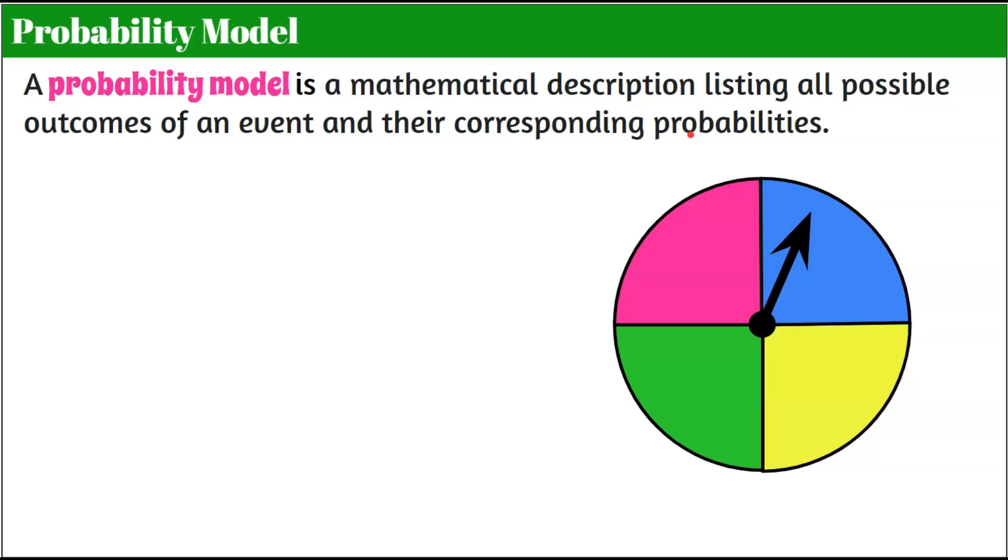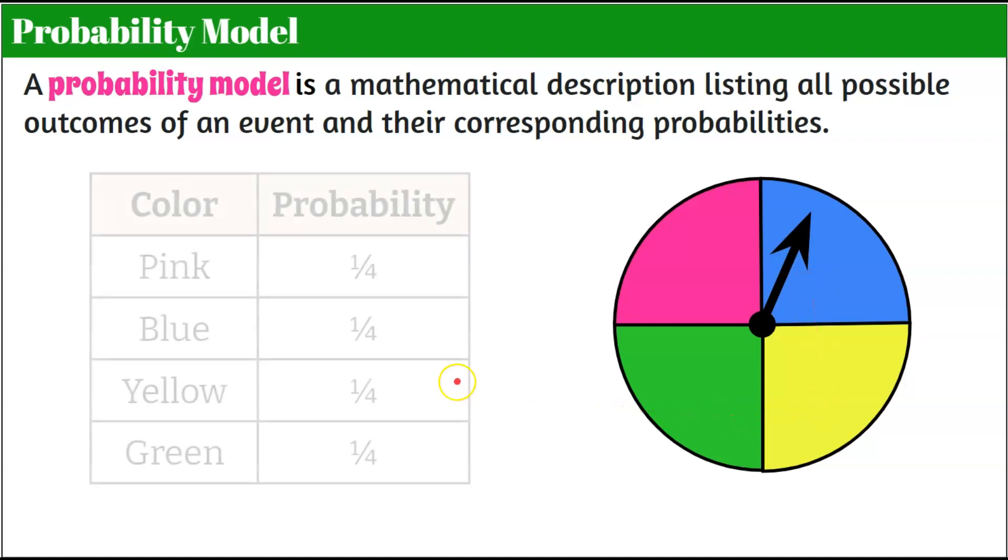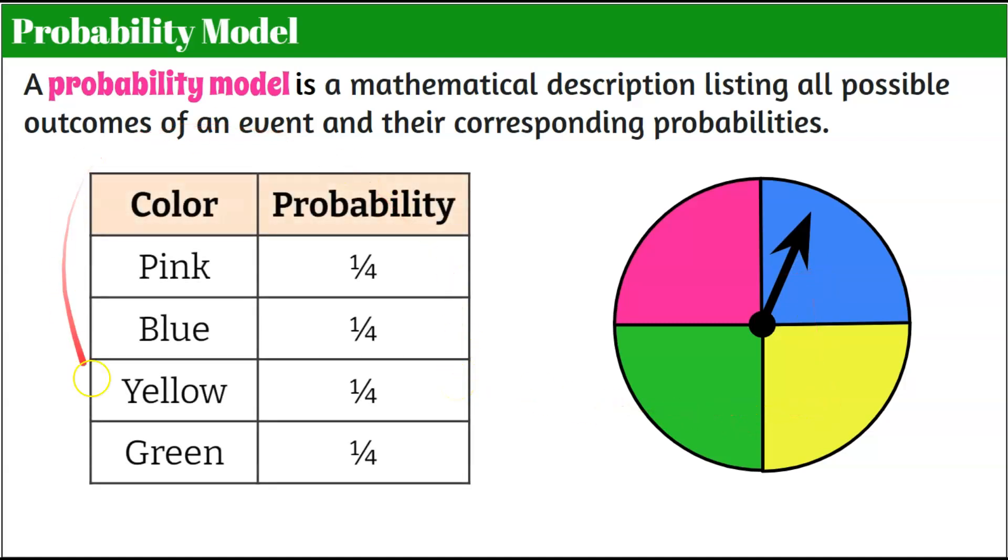We have a spinner here that has four equally sized sections, four different colors. A probability model would be this table. It lists all the different colors that are possible when you spin the spinner and their probability of their outcomes. So there's four different outcomes possible. One of the four is pink, one of the four is blue, one of the four is yellow, and one of the four is green.